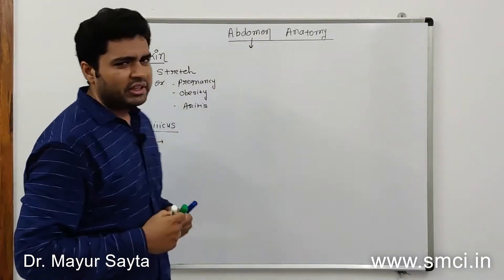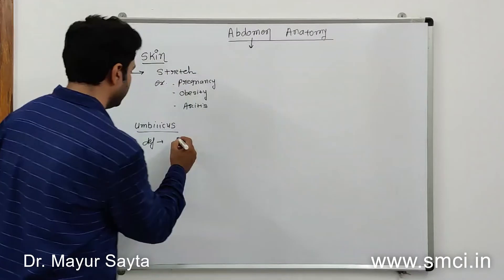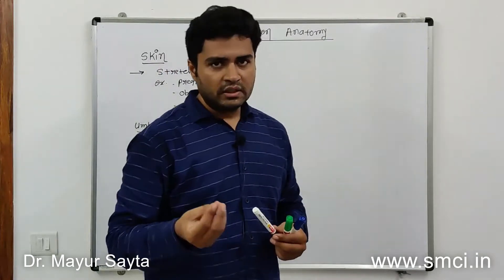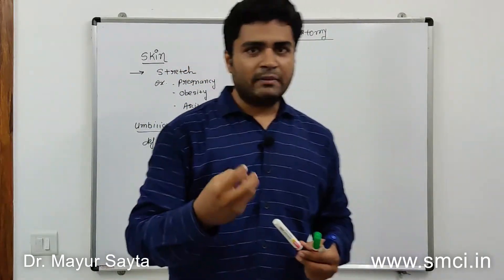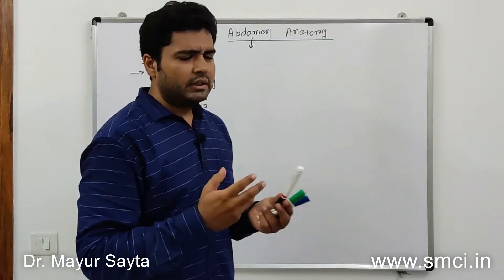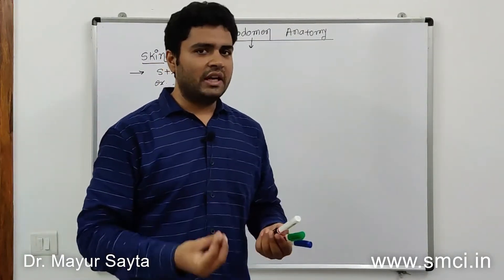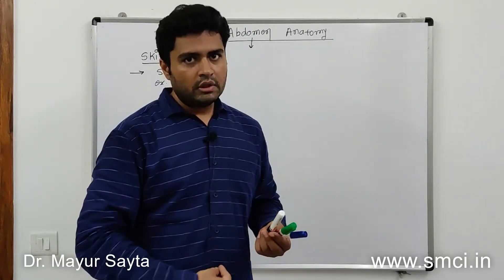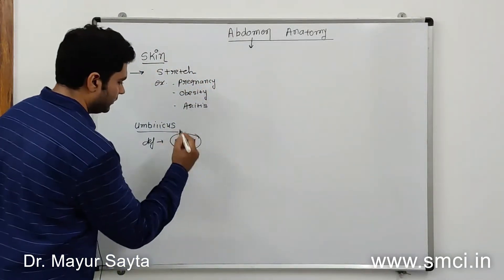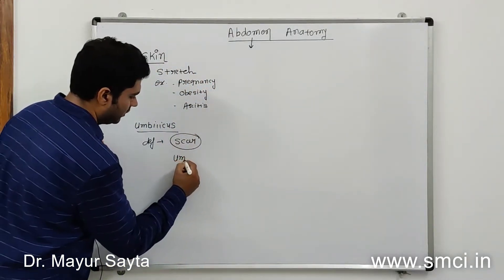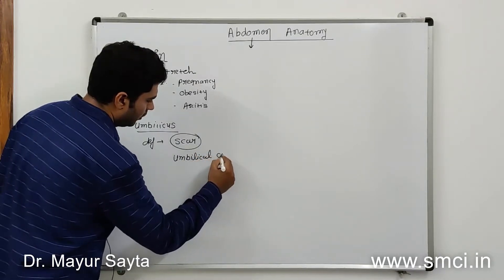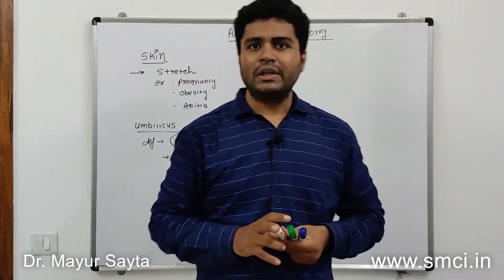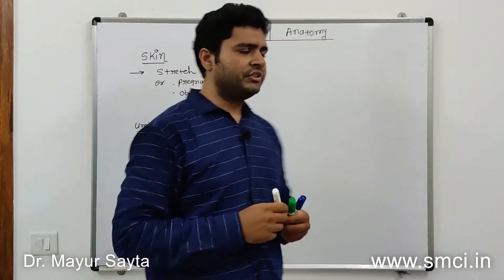The umbilicus is the scar present on the anterior abdominal wall. It is called a scar because during fetal life the umbilical cord was attached here. After birth the umbilical cord falls off, and the remnant left behind is known as the umbilicus.